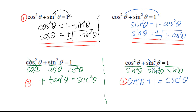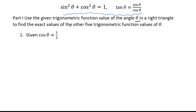There are three trig Pythagorean identities: identity 1 is cosine squared theta plus sine squared theta equals 1; identity 2 is 1 plus tangent squared theta equals secant squared theta; identity 3 is cotangent squared theta plus 1 equals cosecant squared theta. If possible, try to remember all three. Let's go to the examples.